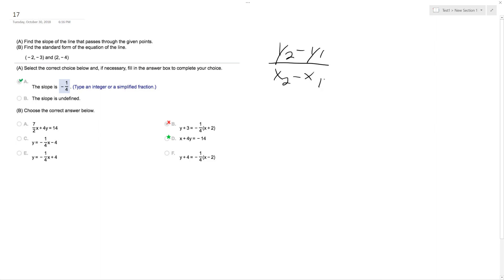It actually doesn't matter which point we put first, just as long as we stay consistent. So I'll make this my x2 and this will be my x1. So y2 is going to be negative 3 minus negative 4 over negative 2 minus 2.